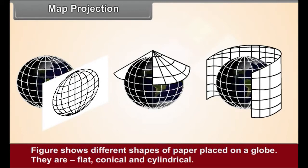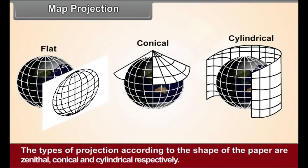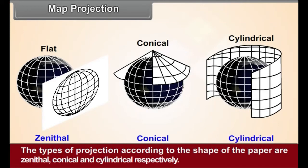Figure 2.1 shows different shapes of paper placed on a globe. They are flat, conical and cylindrical. The types of projection according to the shape of the paper are zenithal, conical and cylindrical respectively.